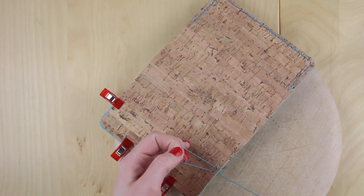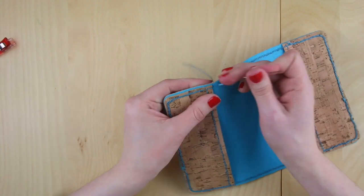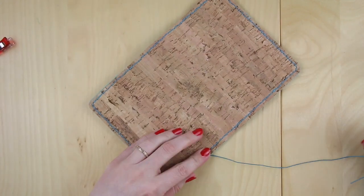As before just work that through the cork fabric and keep going all the way around. So there you go that's you stitched all the way around.